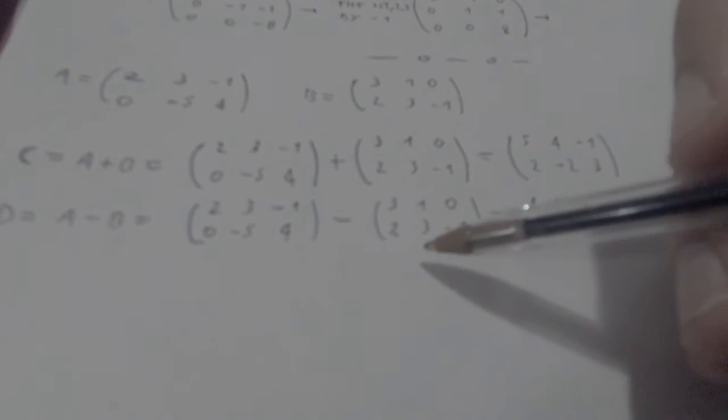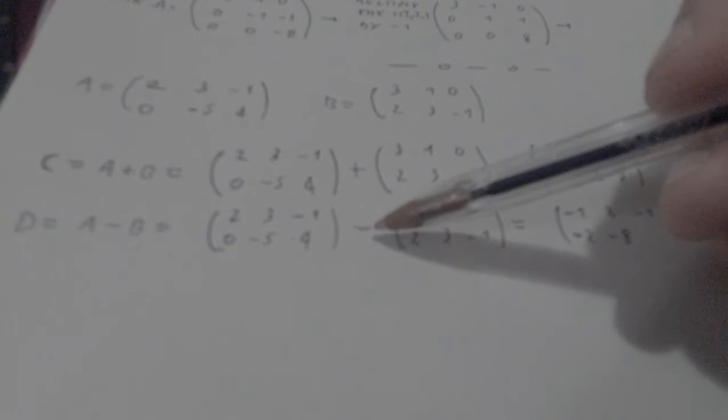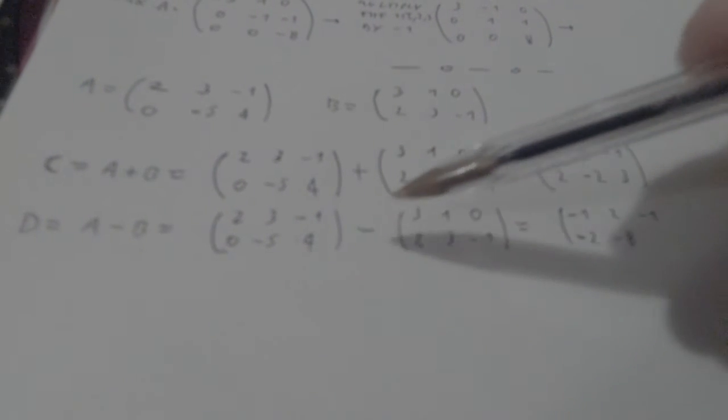Negative 5 minus 3 is negative 8. And then 4 minus negative 1 is 4 plus 1, which is 5.